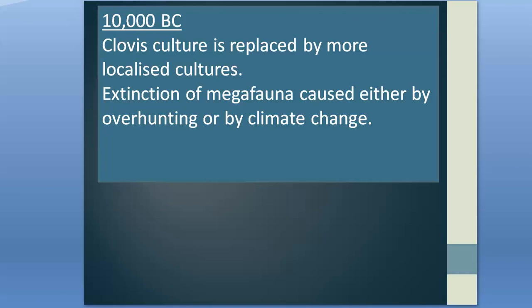It does not mean that climate change alone explains the extinction, but it does suggest that a combination of both factors — overhunting and climate change — would help explain why such a large-scale extinction took place. The main theory for the cause of the Younger Dryas was the reduction or shutdown of the North Atlantic conveyor — the Gulf Stream — due to the influx of meltwater from Lake Agassiz. However, there are a couple of other competing theories.